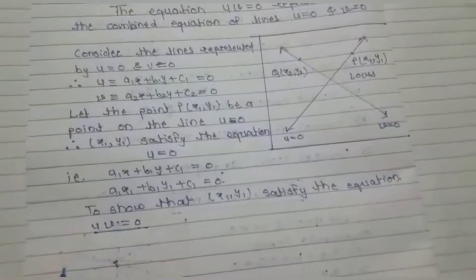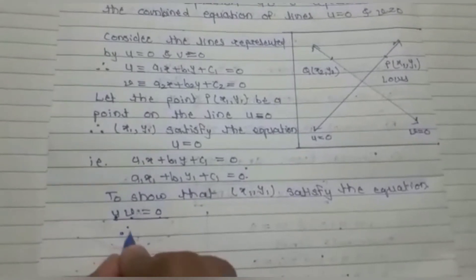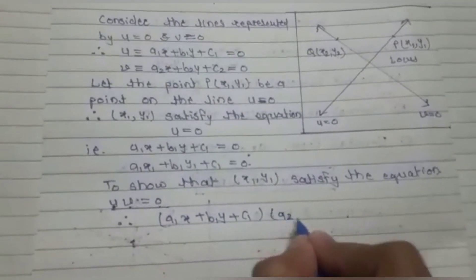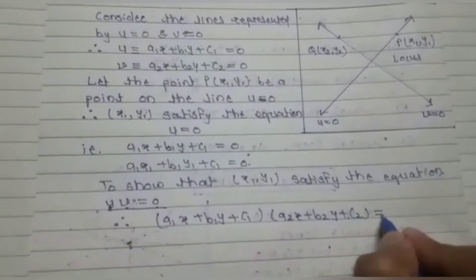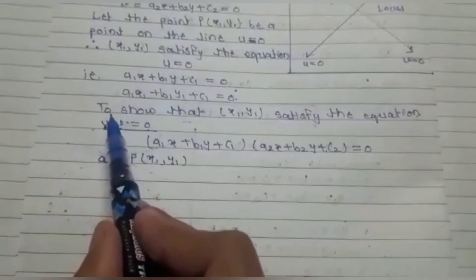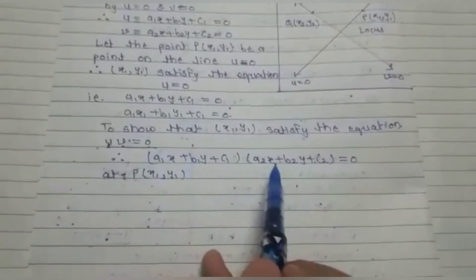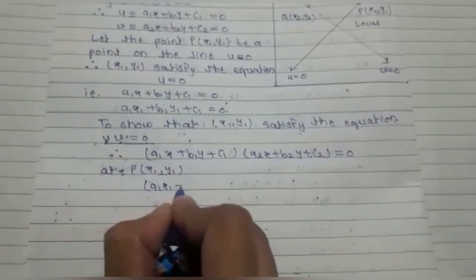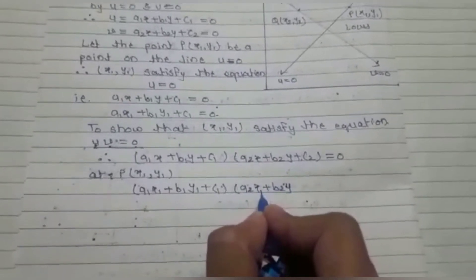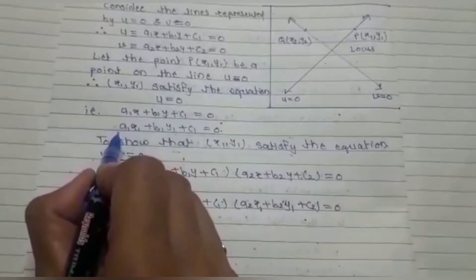Now to show that x1, y1 satisfies the equation uv = 0, which is the combined equation of the lines, we use equations of both u and v. Therefore uv = 0 becomes (a1x + b1y + c1)(a2x + b2y + c2) = 0. Evaluating this at point P(x1, y1), it becomes (a1·x1 + b1·y1 + c1)(a2·x1 + b2·y1 + c2) = 0.